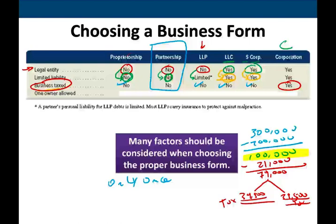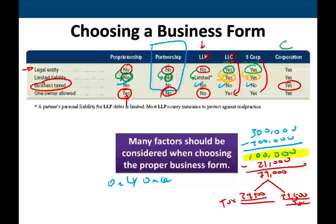How many owners are allowed? For a sole proprietorship, by definition, it's one owner — sole means one. For a partnership, by definition, it's more than one — it could be two, five, 20, 100. You cannot have one owner. For an LLP, it's also a partnership, so you cannot have just one partner. For an LLC, one person can own the company — that's fine. S Corporation: one person can own it. C Corporation: of course, one person can own 100% of the corporation — that's also fine.